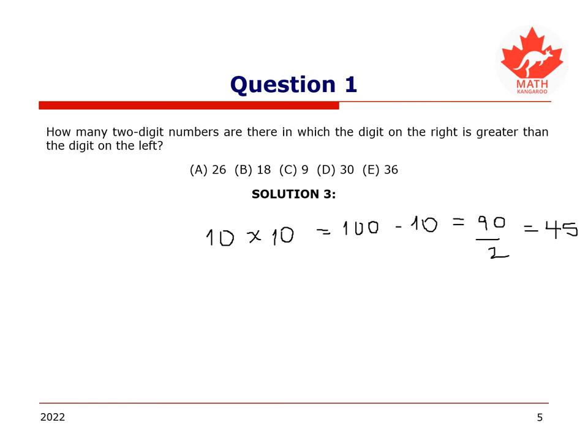However, the 9 numbers 01, 02, all the way to 09 are also in this group, which we counted earlier. As one-digit numbers, they should not be counted. Therefore, we must take 9 away from 45, which gives us 36.